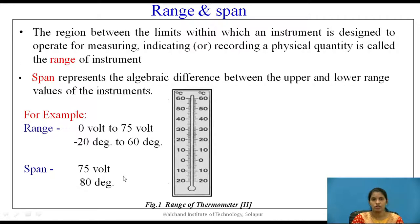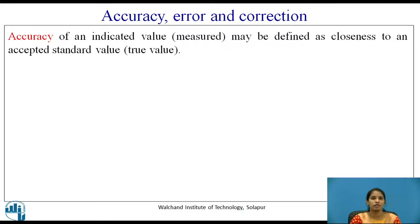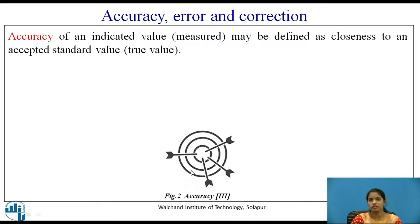Now let us see Accuracy. Accuracy is the degree of closeness to the true value or to the standard value. Accuracy of an indicated value may be defined as closeness to an accepted standard value. Figure 2 shows accuracy. In this diagram, all the arrows are struck at the bull's eye, so the shots are known to be accurate.